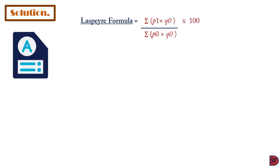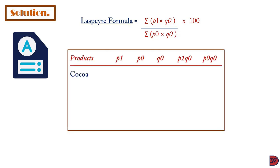For the solution, we start with the Laspeyres. Its formula is the summation of the selected price multiplied by the base quantity, divided by the summation of the base price multiplied by the base quantity, all multiplied by 100. For cocoa, the selected price is $5.50, the base price is $5.00, and the base quantity is 25. Multiplying the selected price by the base quantity gives $137.50.